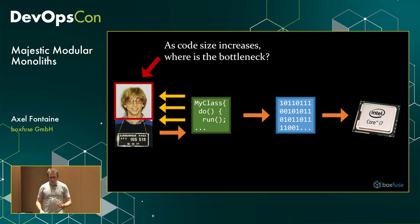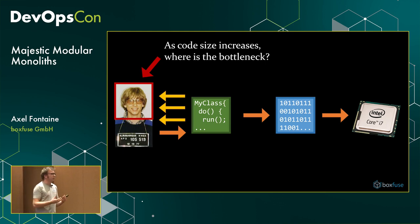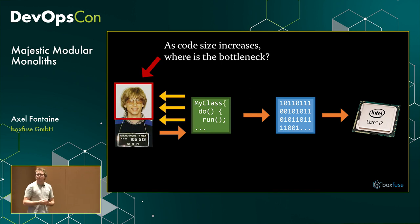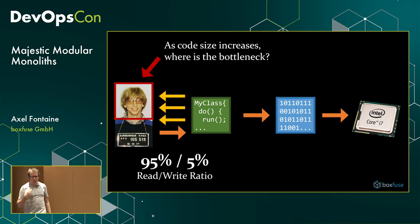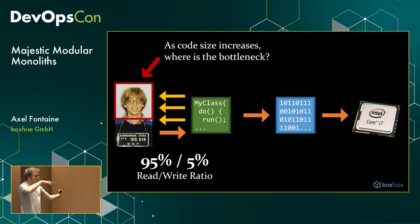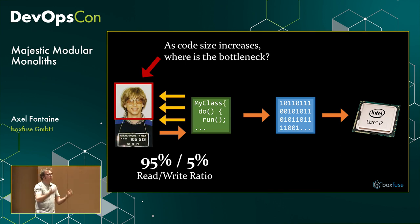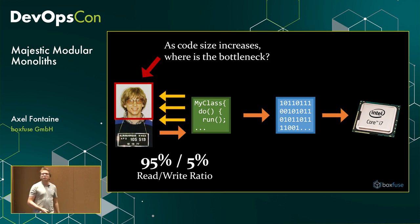If we think about our job as developers, we often think about writing code, but if we look at our day-to-day activities, the read/write time is heavily skewed. We spend a lot more time trying to understand what a piece of code is doing, how it's behaving, and how to modify it to accommodate new requirements. We spend far more time reading than writing code, and that's what we should optimize for to resolve that bottleneck.